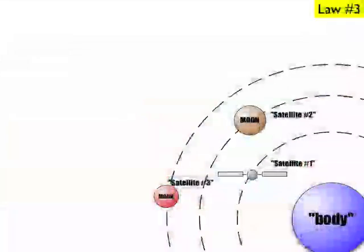Alright, so now let's go to the third law. The third law says that Kepler's constant is equal to the period squared divided by the radius cubed. The period is the time to go around once around the body, and the radius is measured from the center of the body to the center of the satellite.